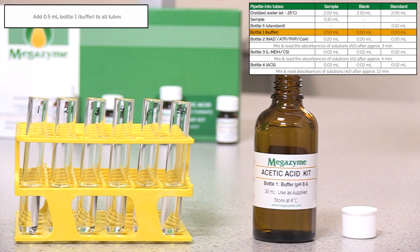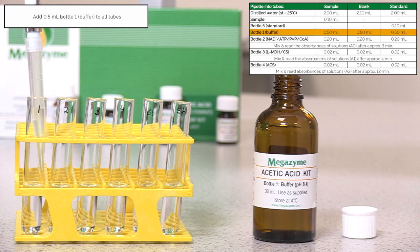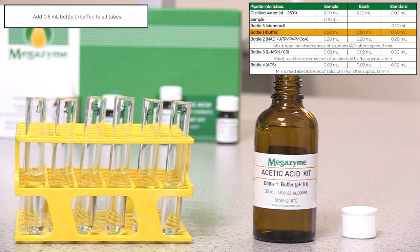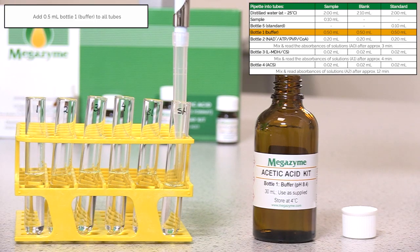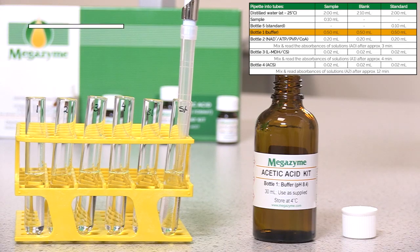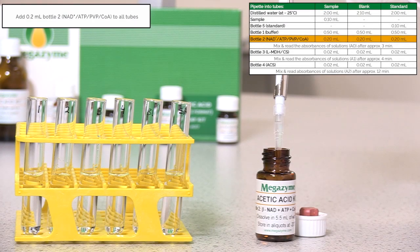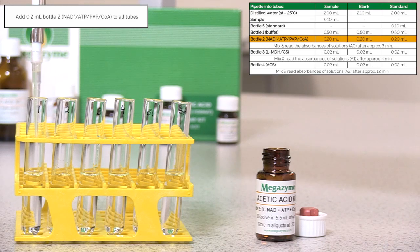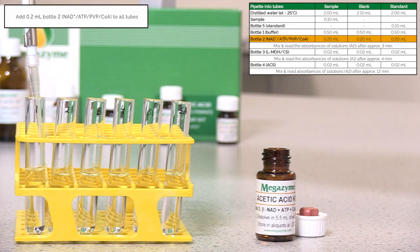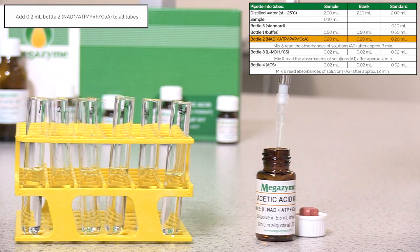Pipette 0.5 ml of bottle 1 buffer into all assay tubes. Pipette 0.2 ml of bottle 2 NAD plus with ATP, PVP, and CoA into all assay tubes.